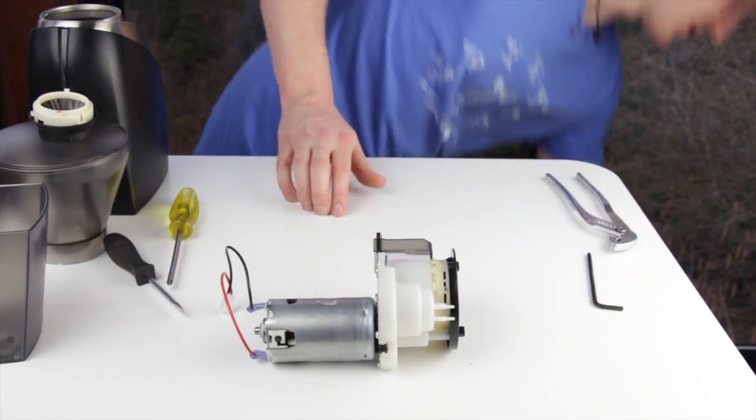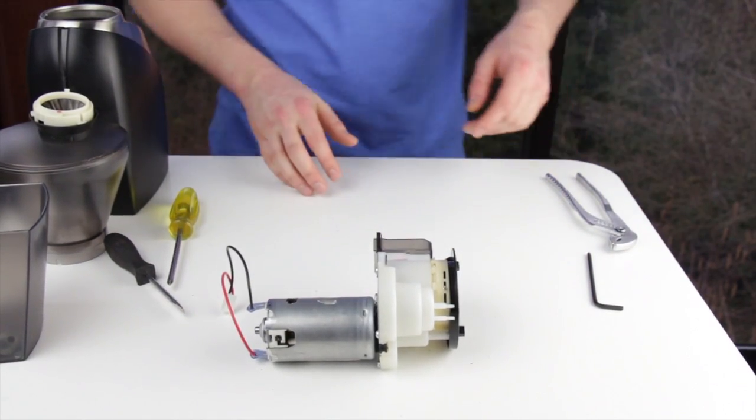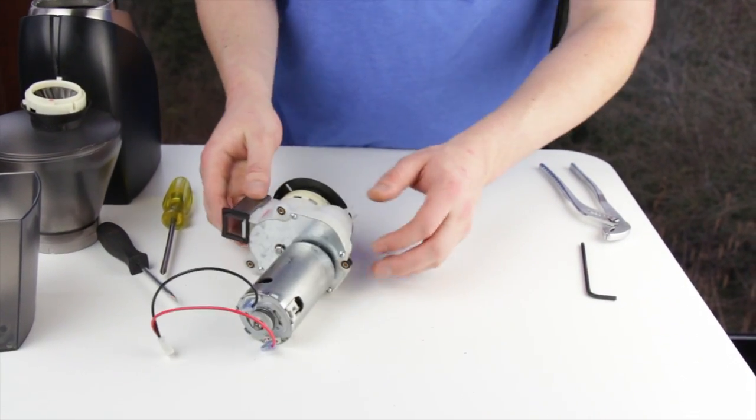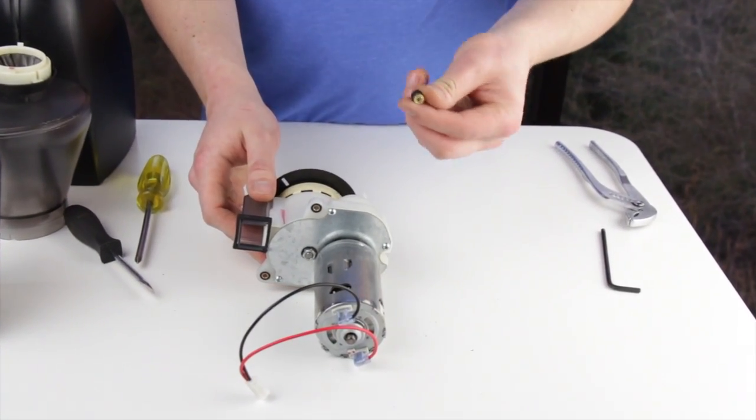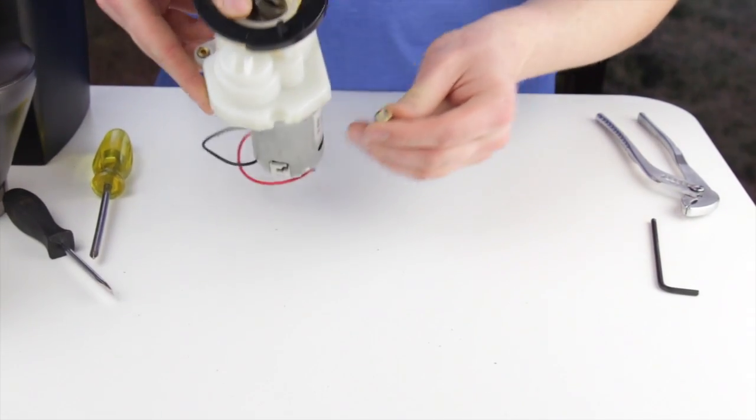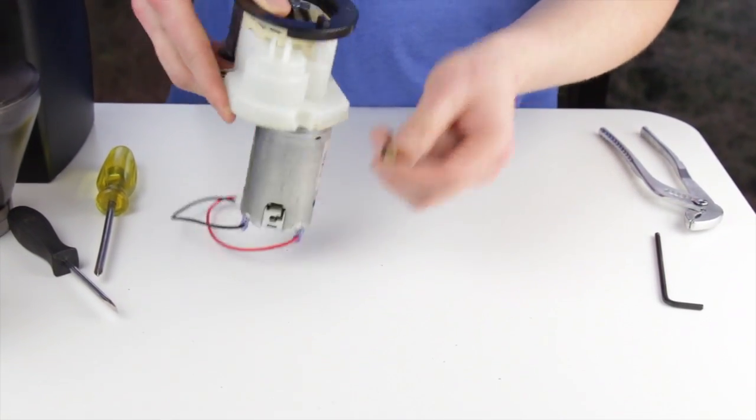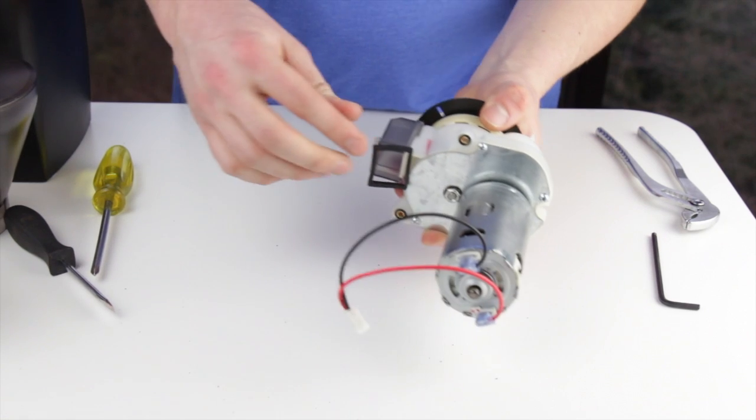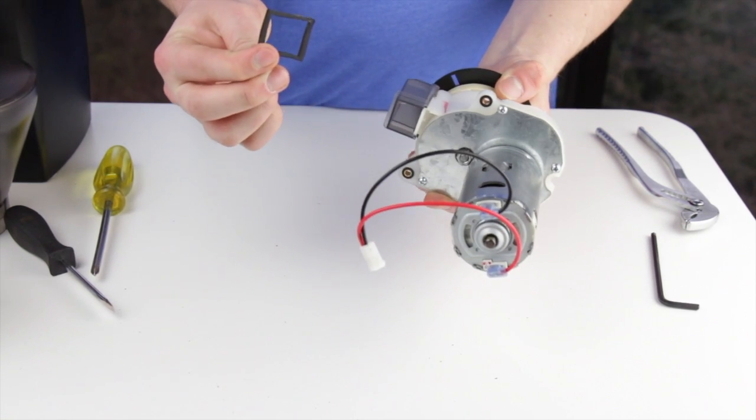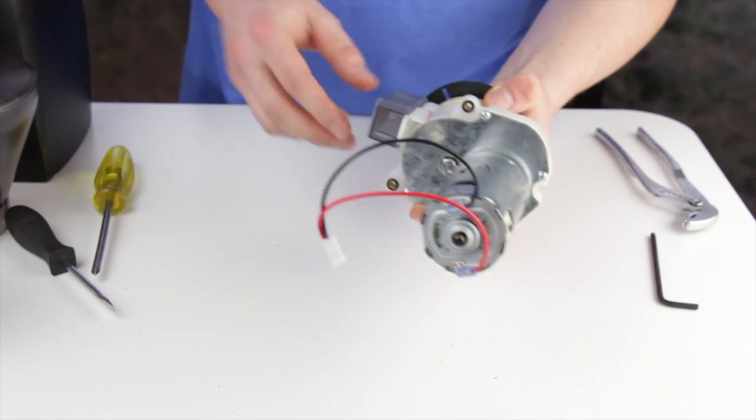I'm going to put the frame to the side and turn our attention to the gearbox assembly. The rear motor mount will come out. Take care not to lose it. The chute gasket will also come out. Take care not to lose that.